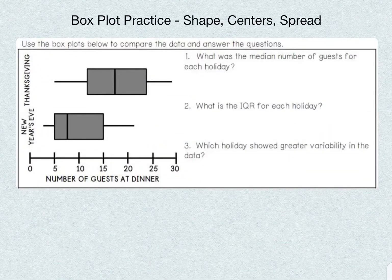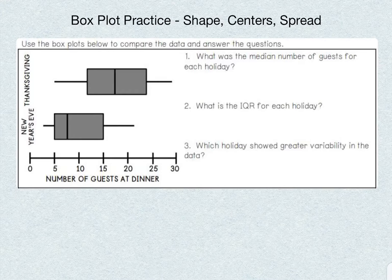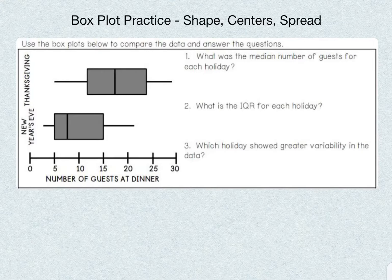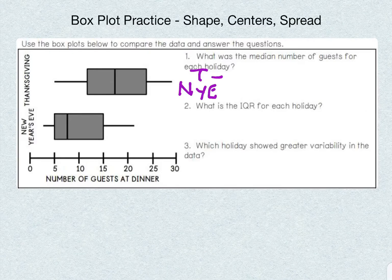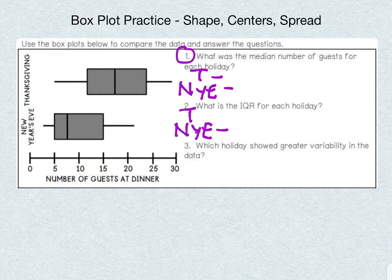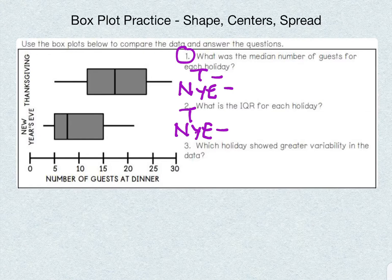Now, since we've covered all those, we're going to go ahead and compare some of these, but we're going to compare two box plots. So we're going to answer three questions here, but the first two are going to have two parts. So number one asks, what was the median number of guests for each holiday? So we're going to have Thanksgiving, and we also have New Year's Eve. So I'm going to do it for number one and number two. So I'm going to be asking you two questions. So starting with number one, the first one is, what is the median number of guests for each holiday? And the first one we're going to look at is Thanksgiving.